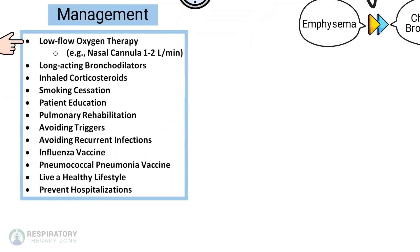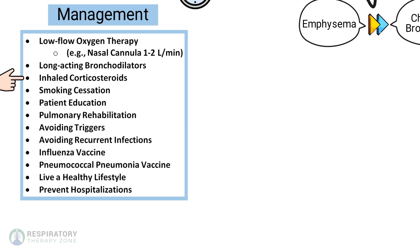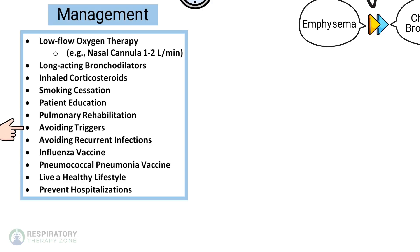Low-flow oxygen therapy, for example a nasal cannula at one to two liters per minute. Long-acting bronchodilators, inhaled corticosteroids, smoking cessation, patient education, pulmonary rehab, avoiding triggers, avoiding recurrent infections, influenza vaccine, and pneumococcal pneumonia vaccine.